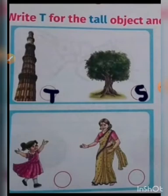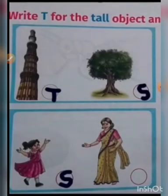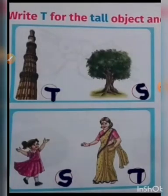Now the next picture is girl and mama. The girl is short and mama is tall. So we will write S in front of the girl — write S inside the circle. Good. Now write T in the circle of the mama.